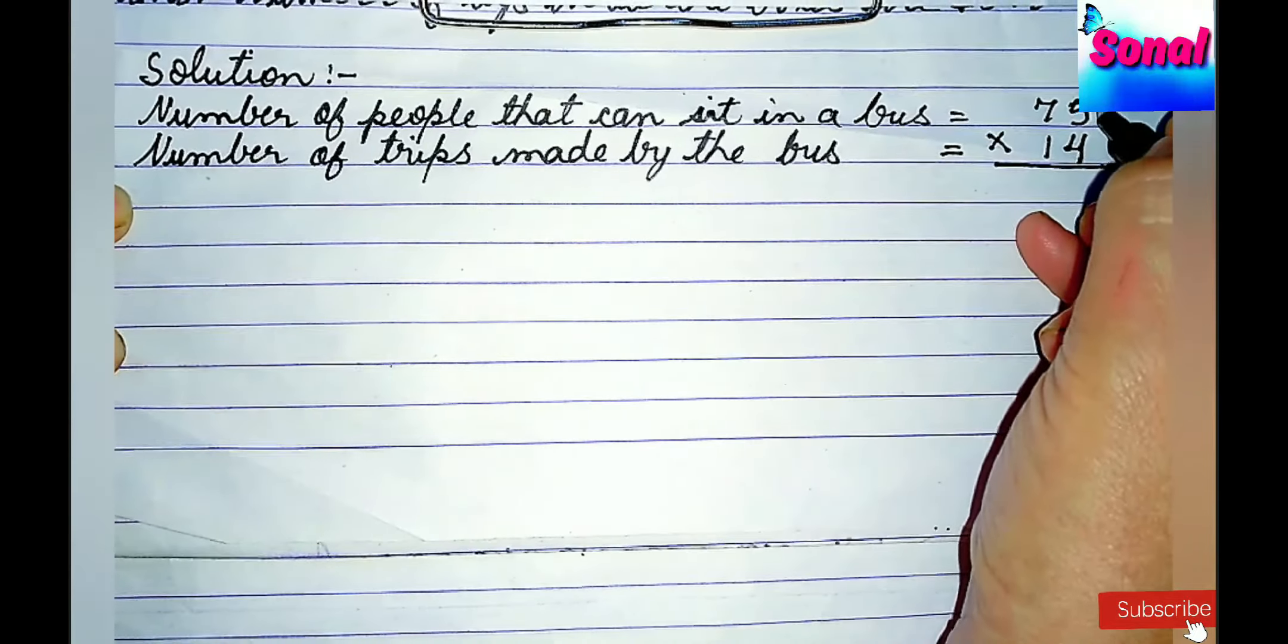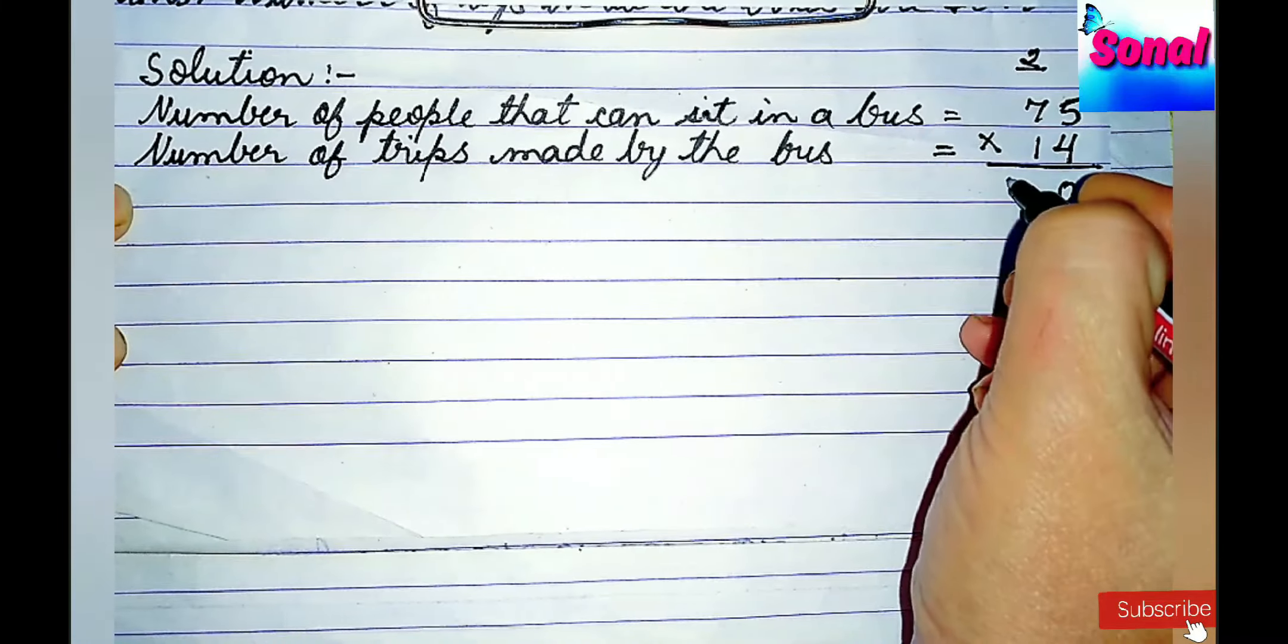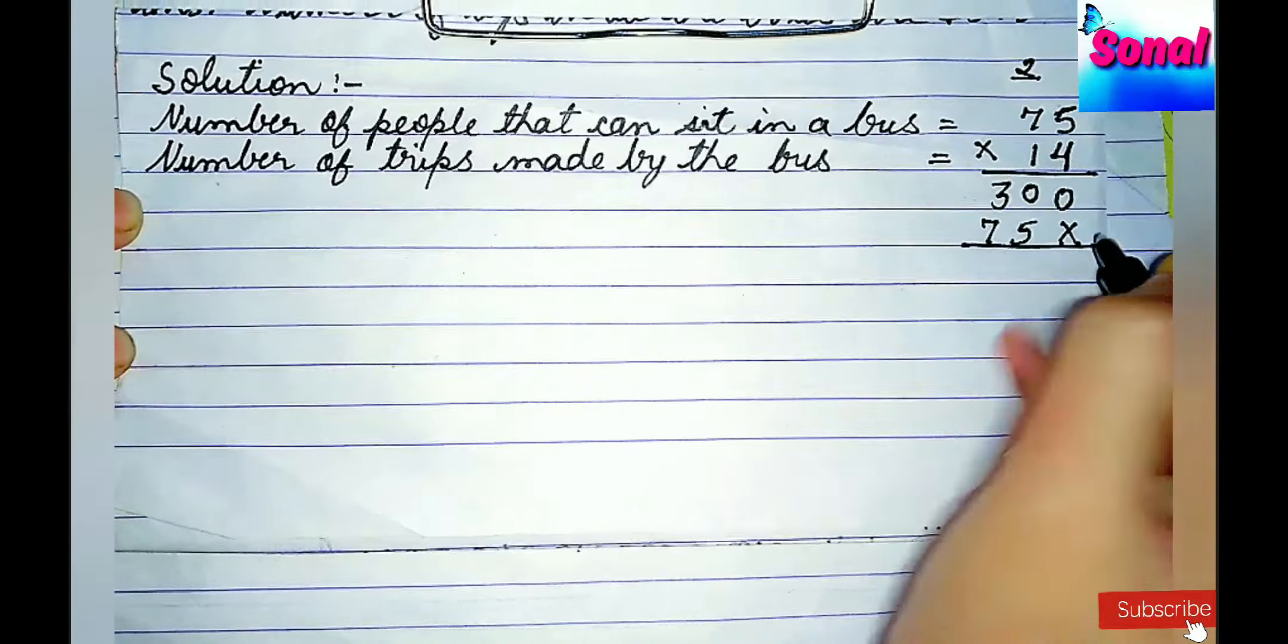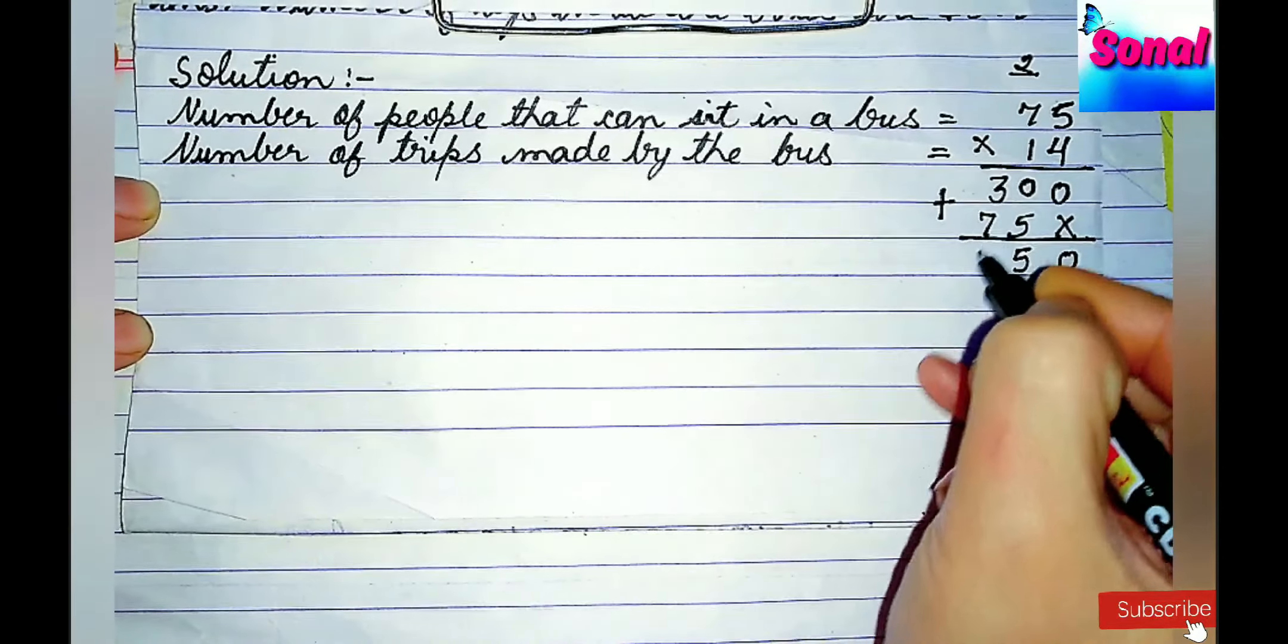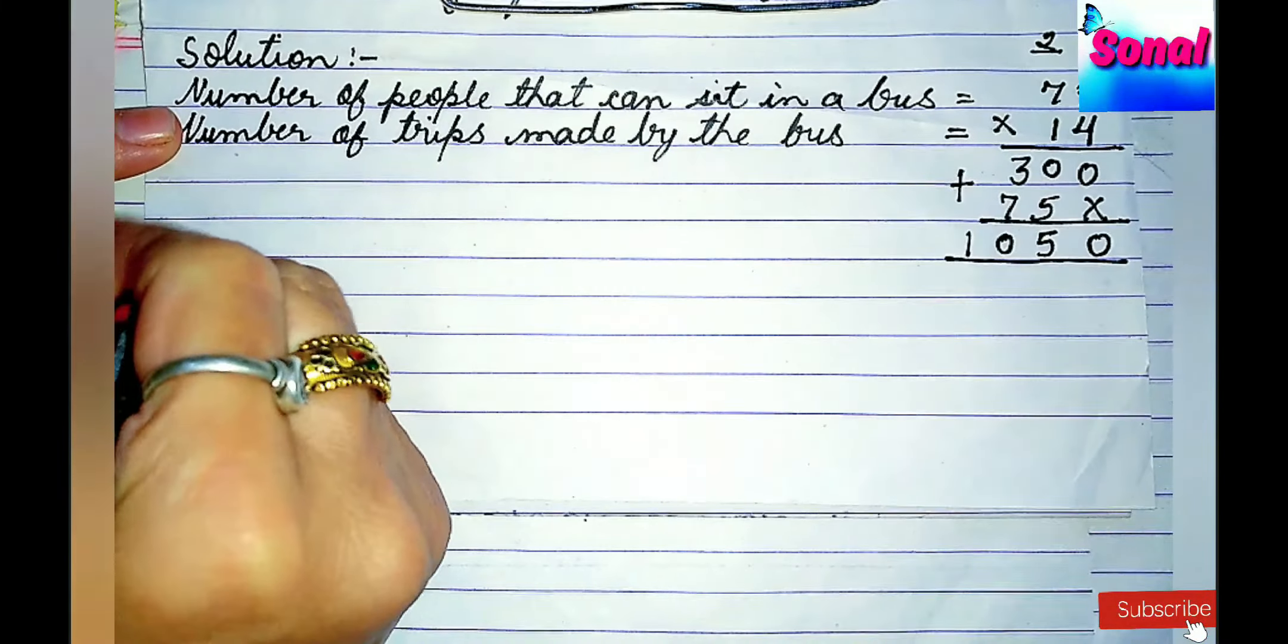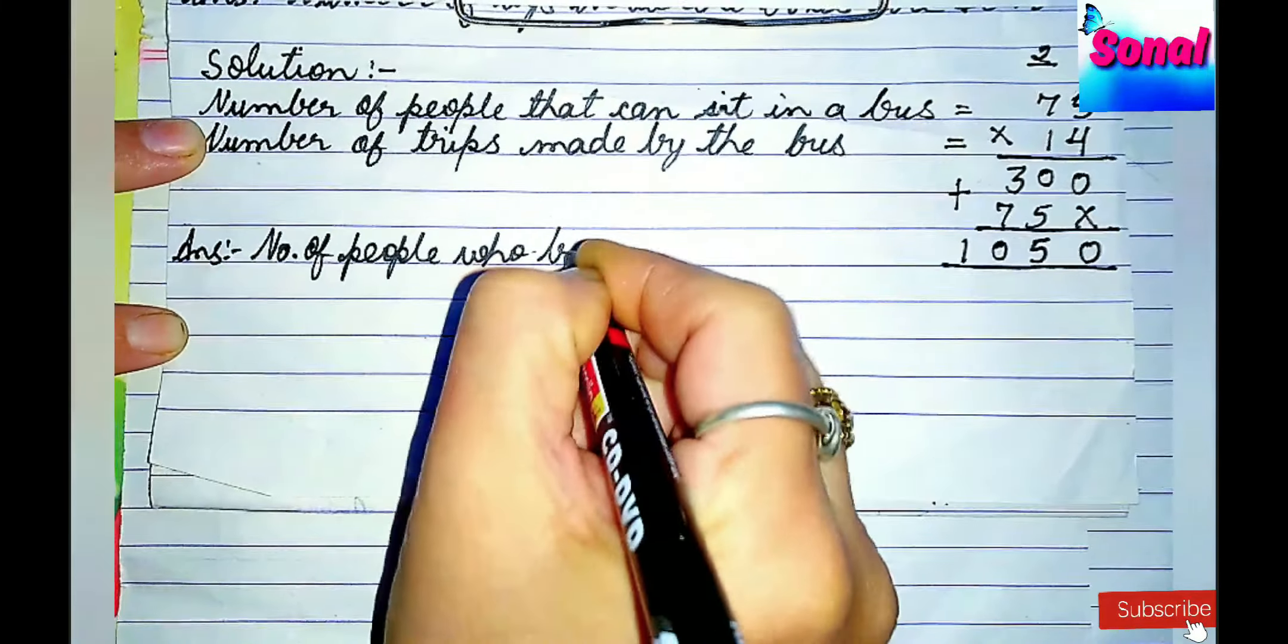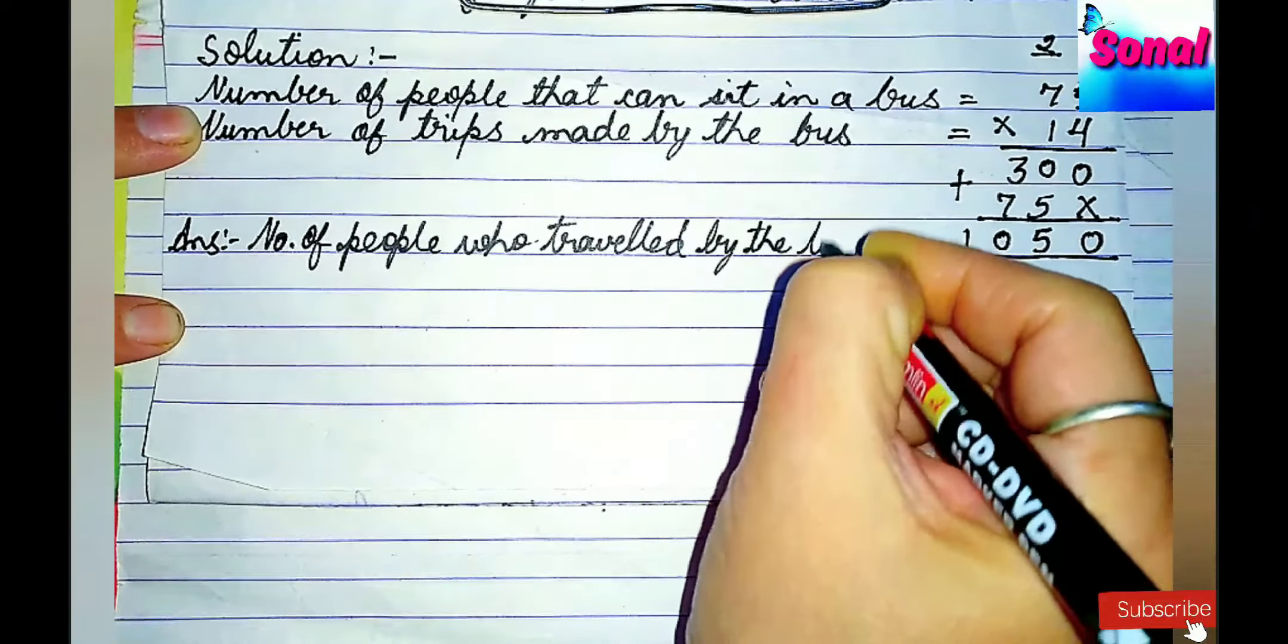On multiplying them, 5 times 4 is 20, write 0, carry over 2. 7 times 4 is 28 plus 2 is 30. Now, 5 ones are 5 and 7 ones are 7. On adding both of them, 0 plus 5 is 5 and 7 plus 3 is 10. The answer is number of people who traveled by the bus.